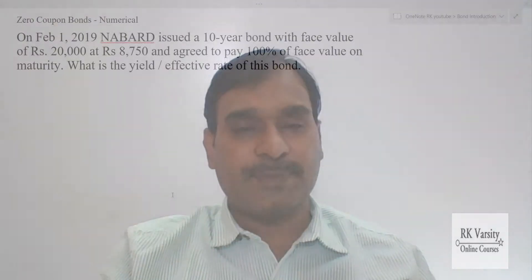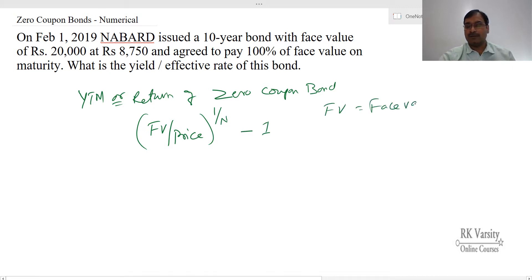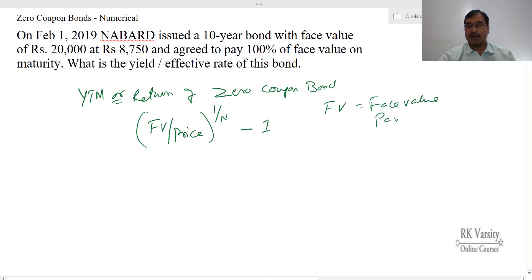Now I will demonstrate that with two examples. To get the yield to maturity or return on a zero coupon bond, we use the equation: face value upon price, raised to the power of 1 upon N, minus 1. Where FV is face value or par value, price is purchase price or discount price, and N is duration or time to maturity.